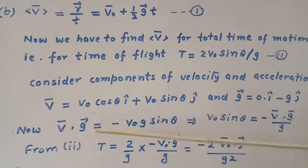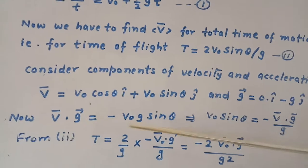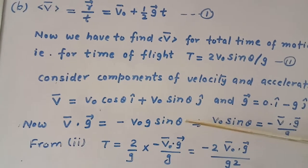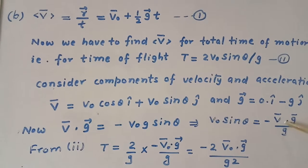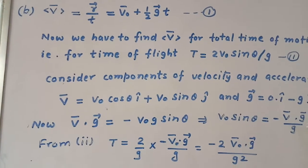Now, dot product V0 dot G equals minus V0 G sin theta, which gives V0 sin theta equals minus V0 dot G divided by G.